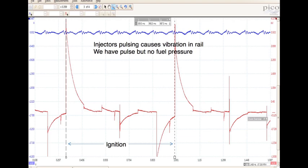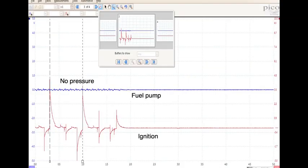This is by far the quickest, easiest, and most cost-effective diagnosis to perform. Although there is no pressure in the fuel rail, there is a vibration from the metal the rail is made of. The injectors are pulsing and the ignition is firing. This diagnosis leads to no fuel pressure causing the no-start. What a tool!